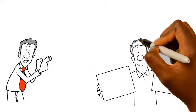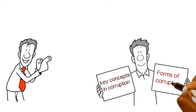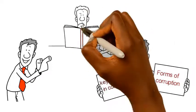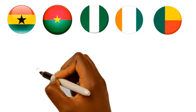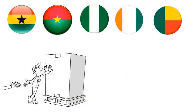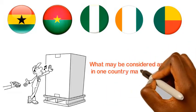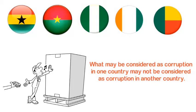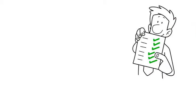Now we will look at some forms of corruption. It is important to note that the key concepts in corruption are also some forms of corruption. There are many forms of corruption and they are difficult to classify. What makes the task more difficult is that in different countries, different crimes are considered corruption. Bribery may probably be an exception — what may be considered corruption in one country may not be in another.